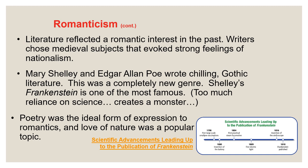Writers chose medieval subjects that invoked strong feelings of nationalism. But as we know, the medieval period was not all that terrific — that's what we mean by looking at the past through rose-colored glasses, seeing it as better than it actually was. The most famous part of literature from the Romantic period is the invention of Gothic literature. Two of the most famous Gothic writers were Mary Shelley and Edgar Allan Poe. Mary Shelley, the author of Frankenstein, is often given credit for inventing the genre of the Gothic novel.